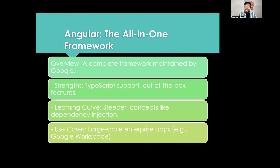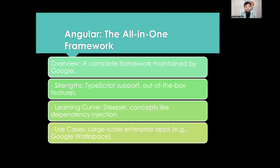Next is Angular. Unlike React, Angular is a framework — everything you need for front-end development exists within Angular. It is a very structured way of development. Strengths include TypeScript support and out-of-the-box features. Everything you need is available out of the box, but you need to spend time understanding it. The learning curve is steeper — concepts like dependency injection and services require solid understanding. As a framework, you must use what is officially prescribed and don't have a lot of freedom. Whereas with React, as a library, there's no imposed folder structure — you have absolute freedom.